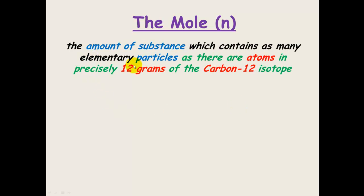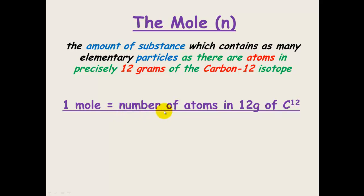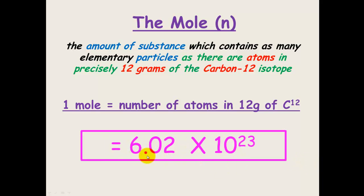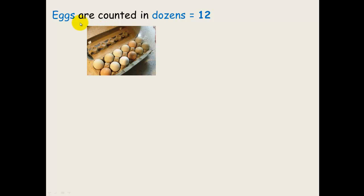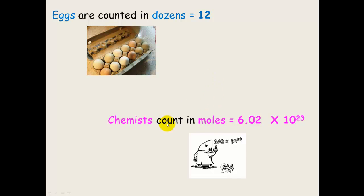Definition: the mole is the amount of substance which contains as many elementary particles as there are atoms in precisely 12 grams of the carbon-12 isotope. Basically, one mole equals the number of atoms in 12 grams of carbon-12 — the most commonly occurring isotope, which is also why we base relative isotopic mass on it. This number equals 6.02×10²³, which is an enormously large number. Just as eggs are counted in dozens where one dozen equals 12, chemists count in moles, where one mole equals 6.02×10²³.